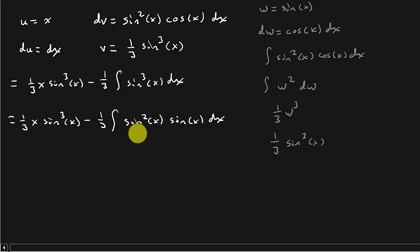Alright, and then we'll rewrite sine squared as what? One minus cosine squared. Times sine x dx.